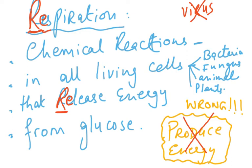Writing 'produce energy' is marked as wrong in mark schemes — this comes from examiners' reports showing students make this error. The definition of respiration has three parts: it is chemical reactions, it occurs in all living cells, and it releases energy. The fuel is glucose, similar to how cars use petrol in combustion.